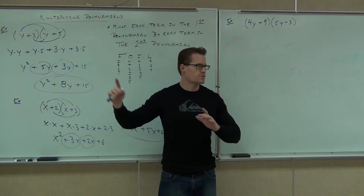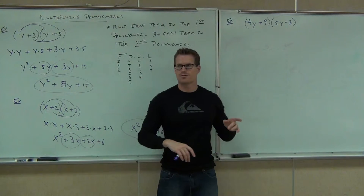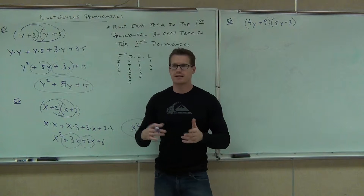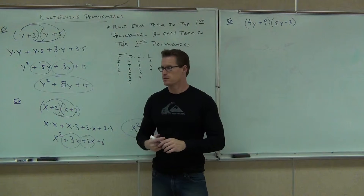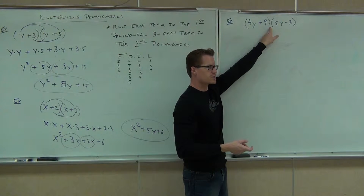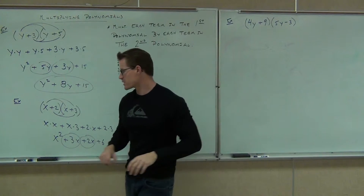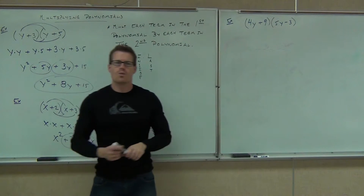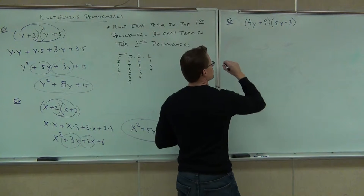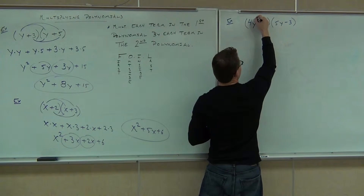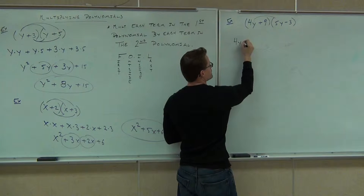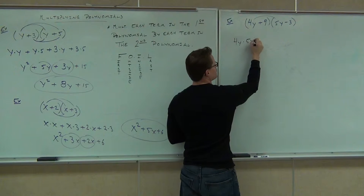What if instead of just y times y, I have something like 4y and 5y? Can we still do it? Does it still look like distribution to you? I still have the multiplication, and FOIL is still going to work because I have 2 terms times 2 terms. Why don't you tell me what's the first couple terms I'm going to multiply? 4y times 5y. So I'm going to write that out: 4y times 5y.